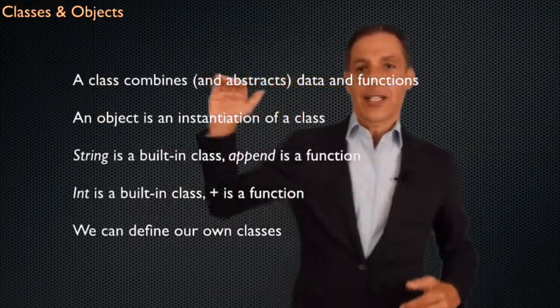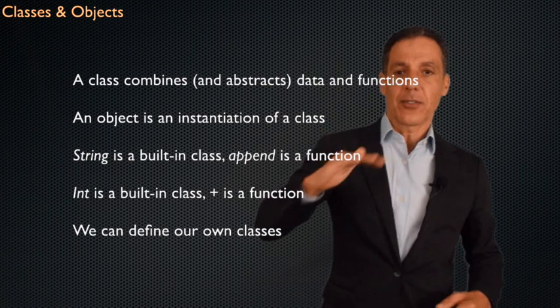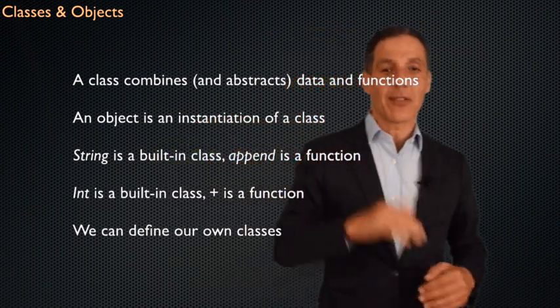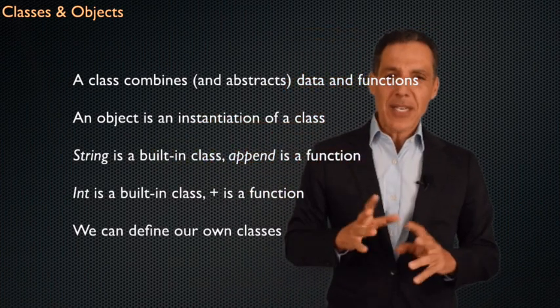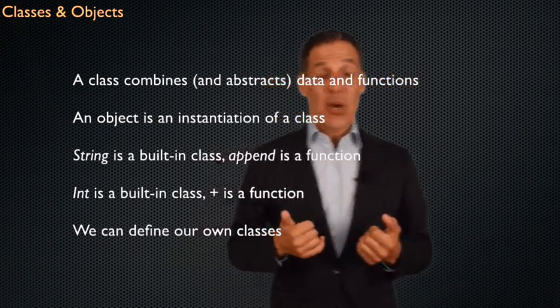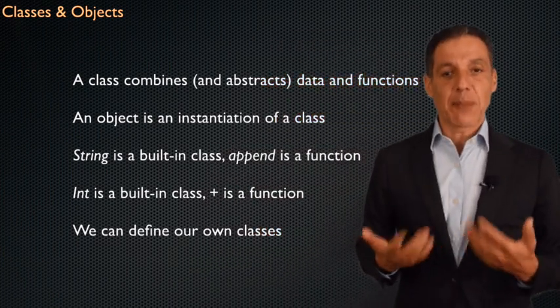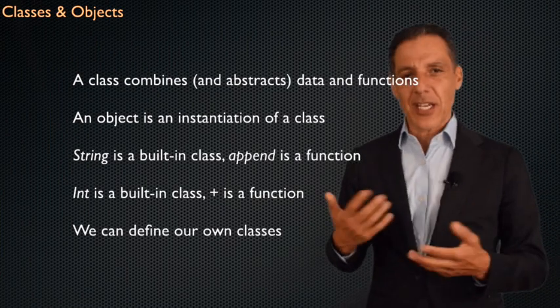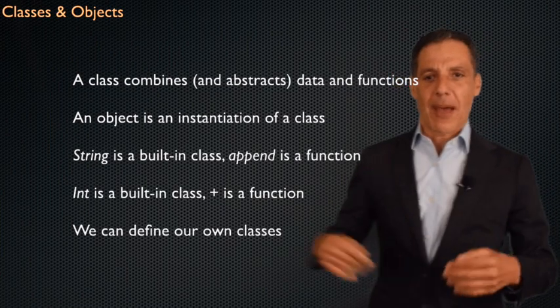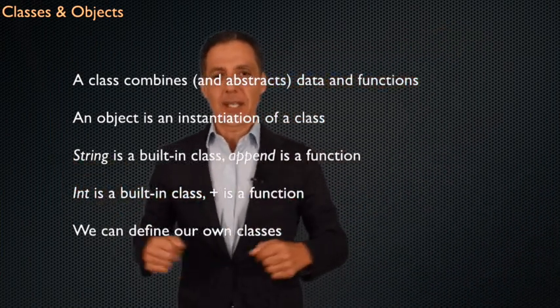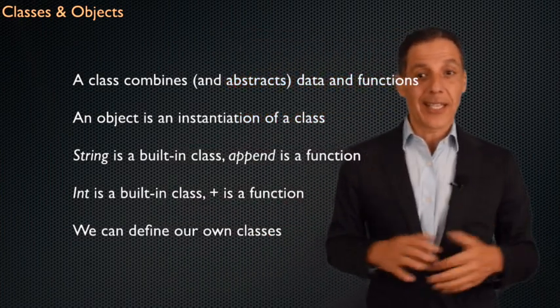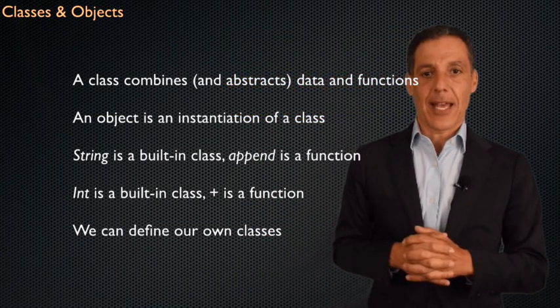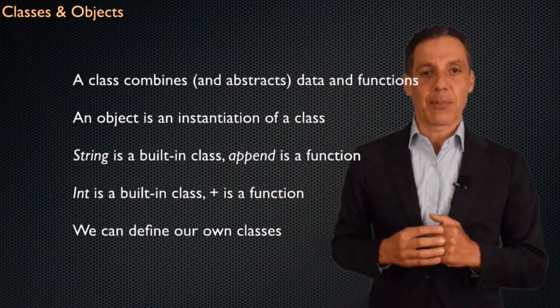And I'll be using these terms throughout the next few weeks. I just want to make sure that we understand the distinction between a class, which is a definition, and an object, which is a thing that we've actually created that we can now act on. Now, as I said, a class combines and abstracts data and functions. An object is an instantiation of that class. And I've been hinting this throughout the whole semester is we've sort of seen objects in classes already. There's that dot notation that's been lingering around. I think I probably mentioned that a string at some point is sort of like a class. A list is like a class.